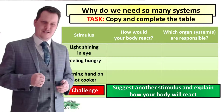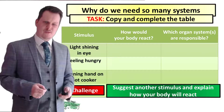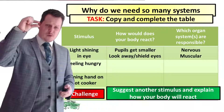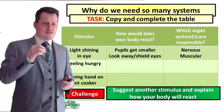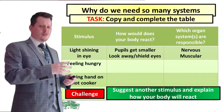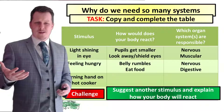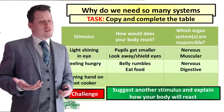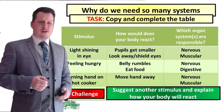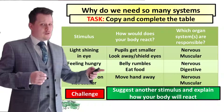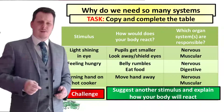Okay, are we finished? So light shining in the eye — how's the body going to react and what organ systems are responsible? Well the pupils are going to get smaller and you're probably going to look away and shield your eyes. The organ systems responsible for this are the nervous system and the muscular system. If you're feeling hungry, you're probably going to get a rumbling in your belly and then go and eat some food. The organ systems responsible for this are the nervous system and the digestive system. If you burn your hand on a hot cooker, then you're probably going to move your hand away, and the organ systems responsible are the nervous system — to detect that stimulus — and the muscular system.